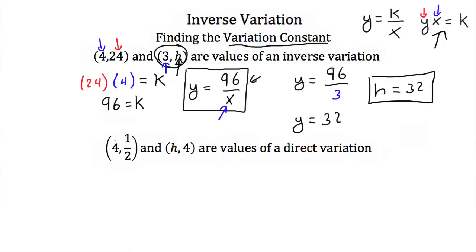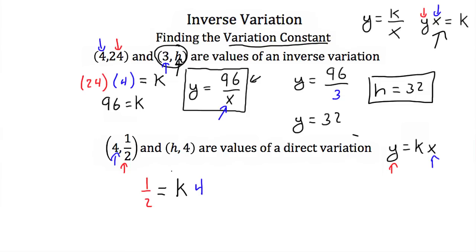Let's try this again. Here we have (4, 1/2) and (h, 4) as values of a direct variation this time. A direct variation equation looks like y is equal to k times x. We're going to follow the same steps — plug in 4 for x and 1/2 for y. We'll have 1/2 is equal to k times 4. To solve for k, we divide both sides by 4.